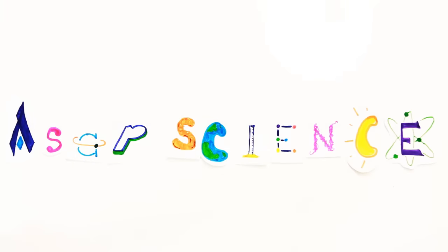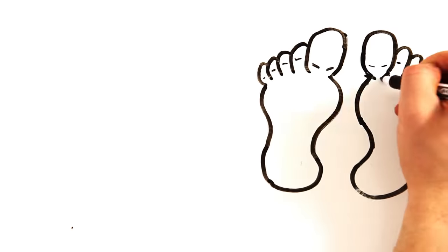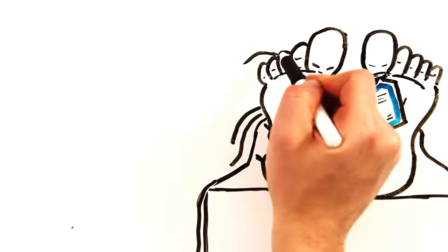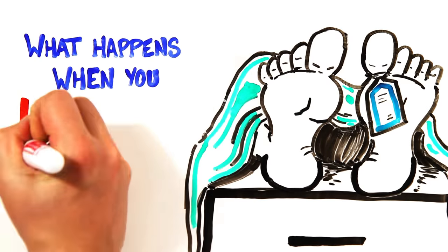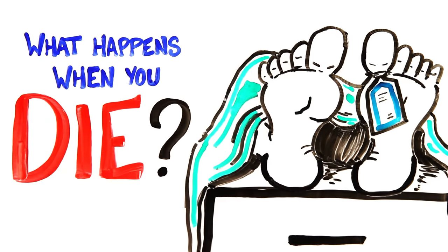Death is something that all of us must deal with at some point in our lives, whether it be a family member, a pet, or even your own eventual end. In fact, about 100 people die every minute in the world. But what actually happens when you die?